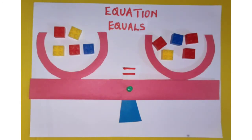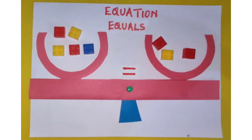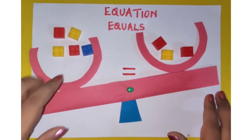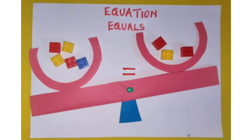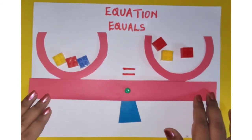Same way with subtraction. If I remove two blocks from the right-hand side, it is unbalanced again because this side weighs more. So what do we have to do to balance the scale? I will have to subtract two from this side as well. So the scale is balanced again.